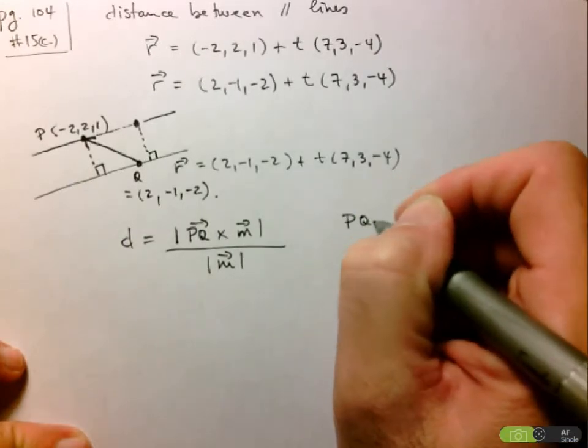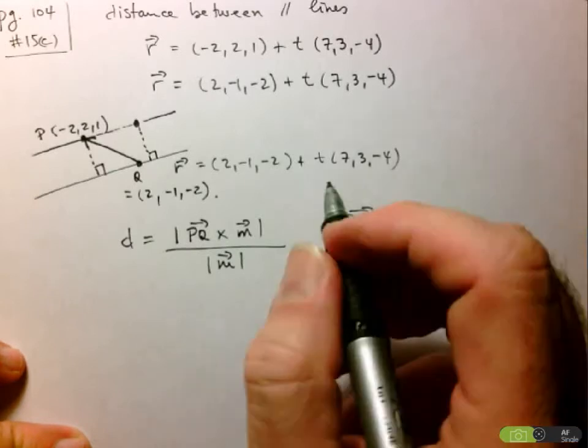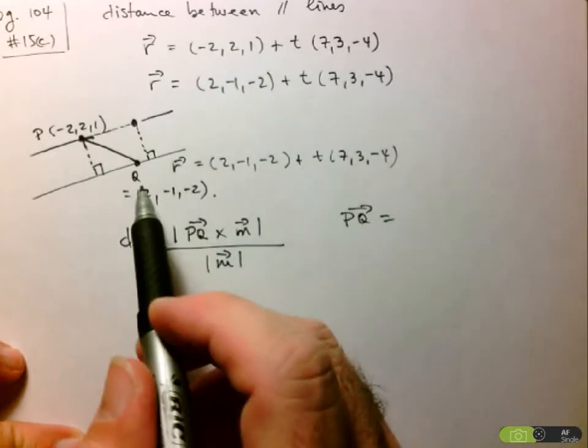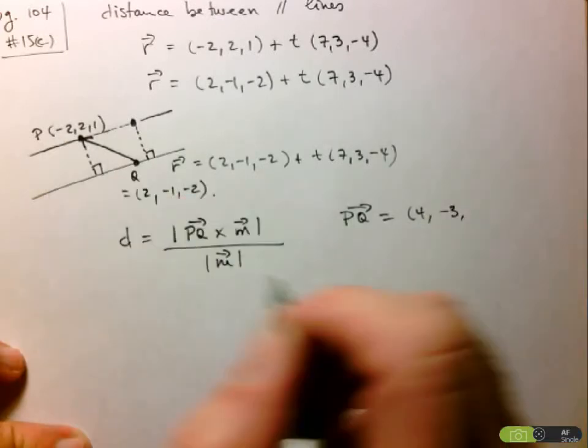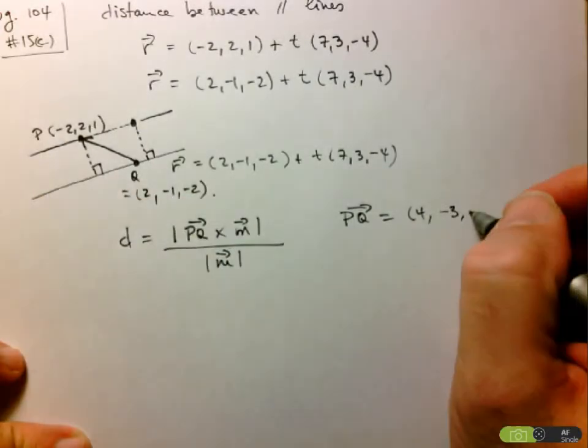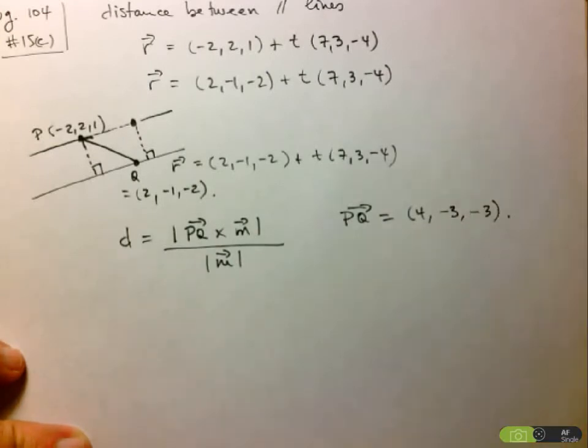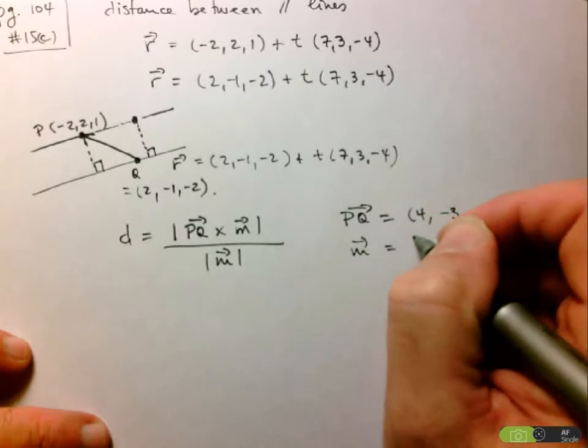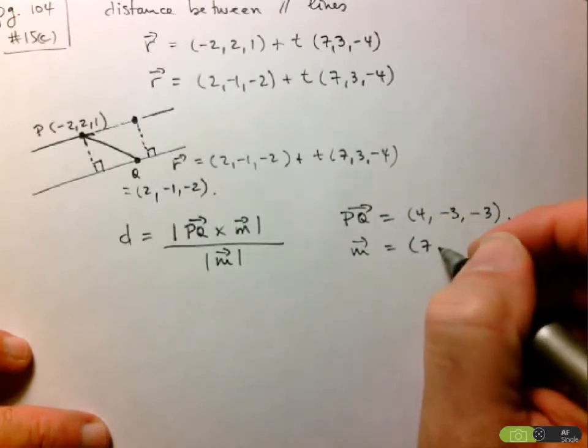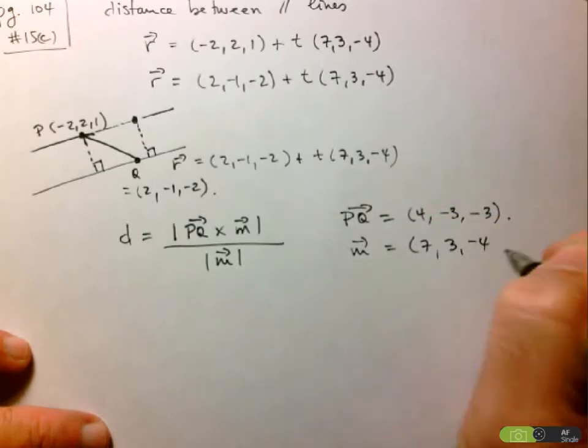So let's start by finding PQ. So here we have 2 minus negative 2, so that's 4. Then negative 1 minus 2 is negative 3. And then negative 2 minus 1 is also negative 3. So we have PQ. We have M, of course, is equal to (7, 3, -4).